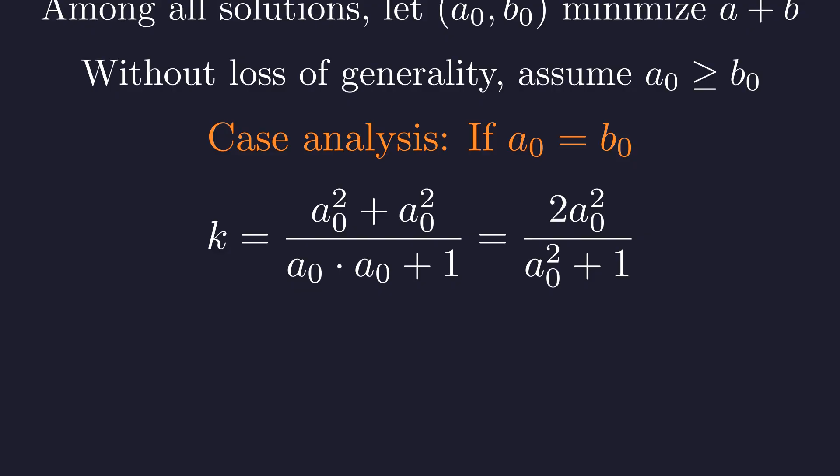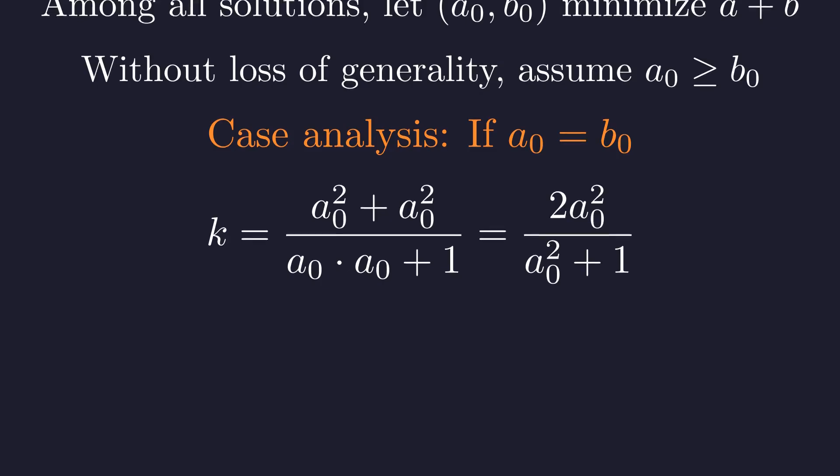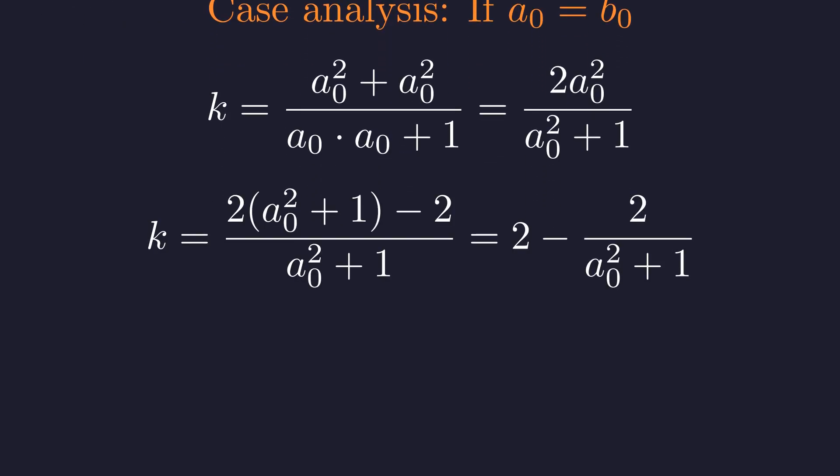When a0 equals b0, our expression simplifies to 2 times a0 squared divided by a0 squared plus 1. We can rewrite this as 2 minus 2 divided by the quantity a0 squared plus 1. For k to be an integer, this fraction must be an integer. Since the numerator is 2, the denominator must divide 2.